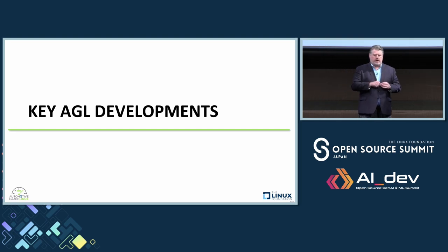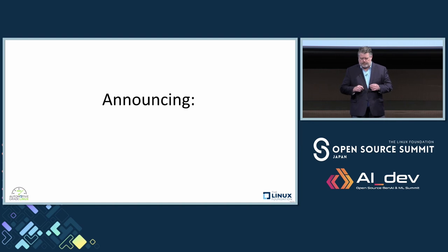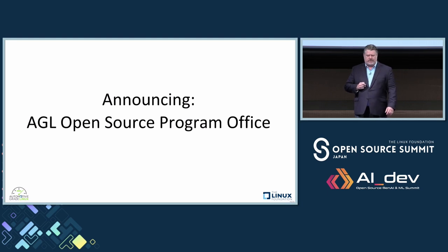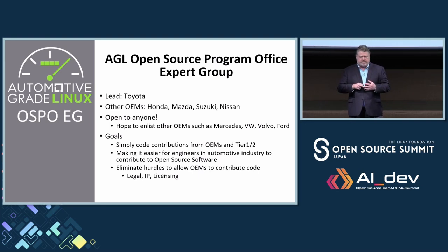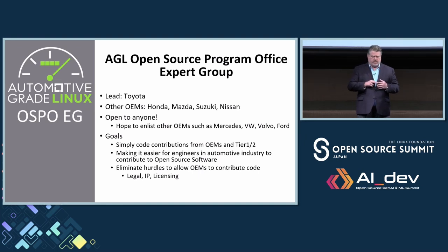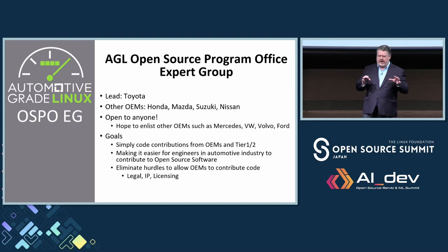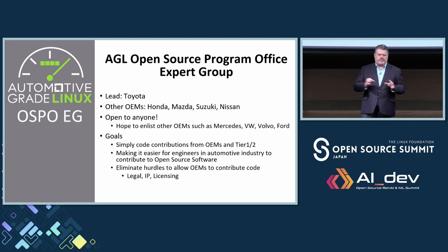I want to talk about a few other key AGL developments. Today we're really proud to announce the formation of the AGL Open Source Program Office. This has been in the works for several months. The OSPO, as we call it, is being led by Toyota. We have participation from Honda, Mazda, Suzuki, and Nissan, and we hope to get participation from others like Mercedes, Volkswagen, Volvo, and Ford. The goal is to define and document mechanisms to make it easier for car companies to contribute code to AGL and to open source in general.